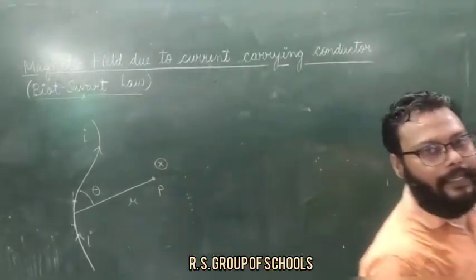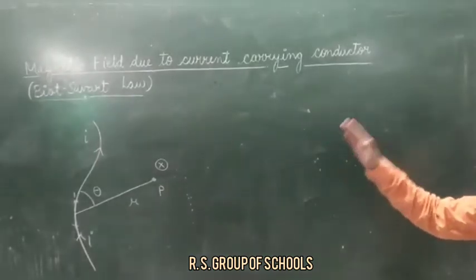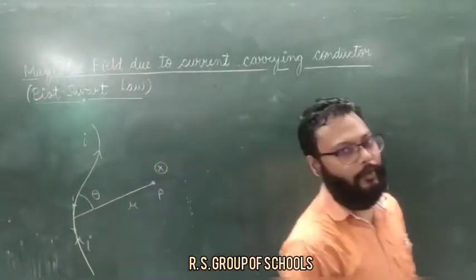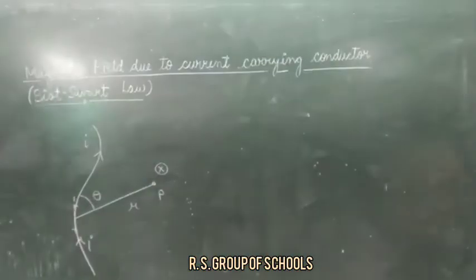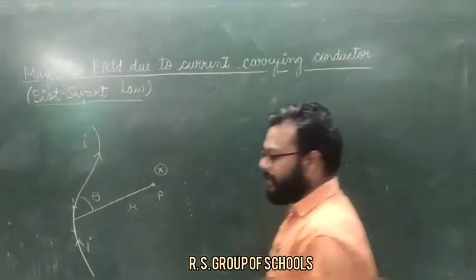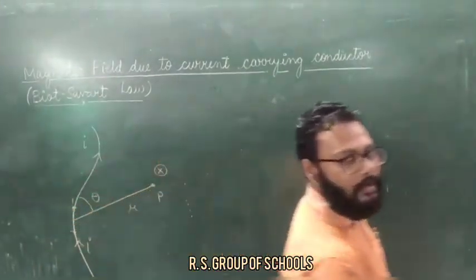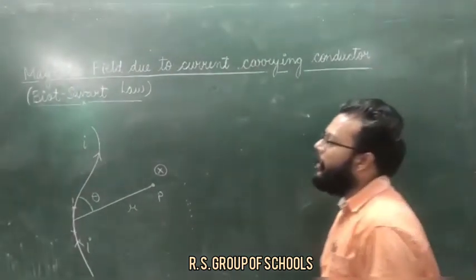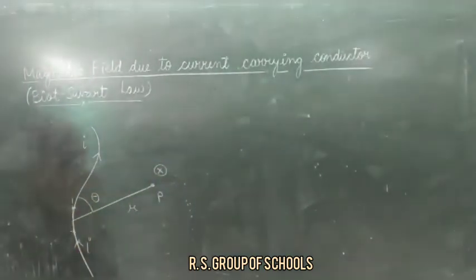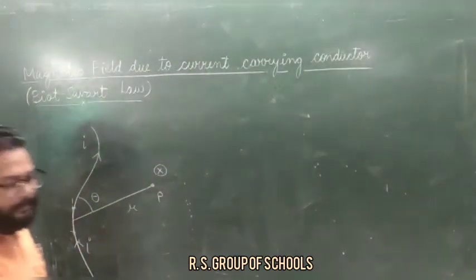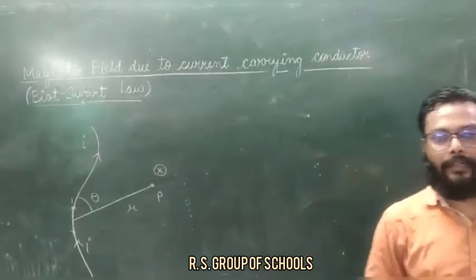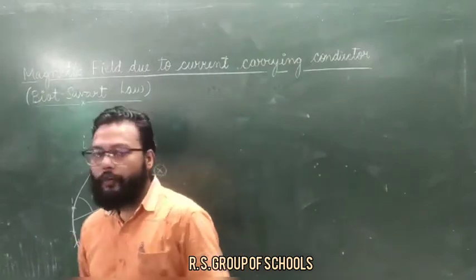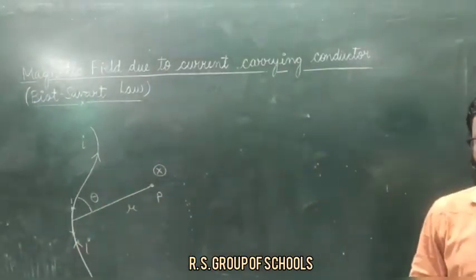The current carrying conductor produces a magnetic field. As we are acquainted with the first concept, which is the magnetic effect of electrical current. Two scientists, Biot and Savart, performed many experiments and concluded a formula for the magnetic field due to a small current carrying element.